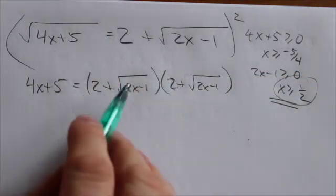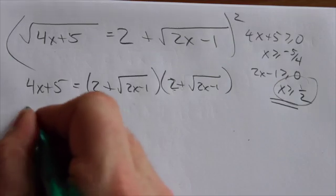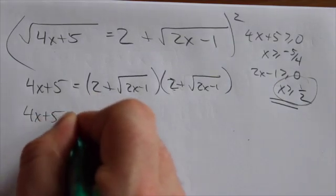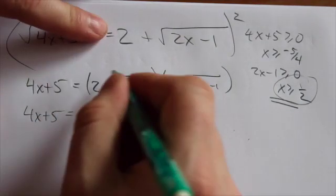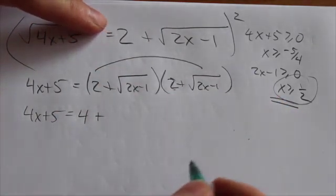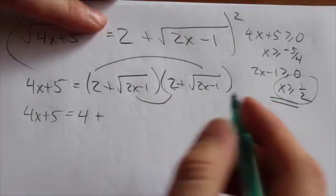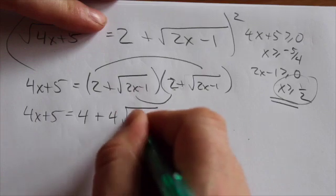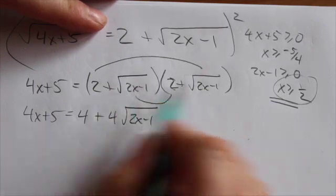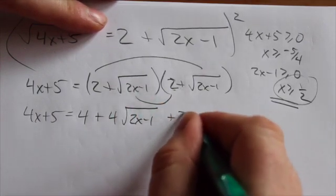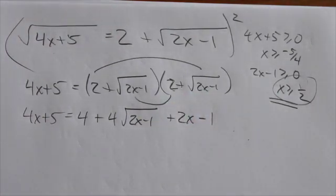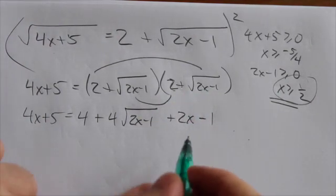So now I have to distribute both terms from here to both terms here. So we have 4x plus 5 is equal to 4. Now there's going to be 2 times root 2x minus 1, and then root 2x minus 1 times 2, so there's going to be 4 of those total. And then I get to square the radical, which will give us 2x minus 1 on that side of the equation.